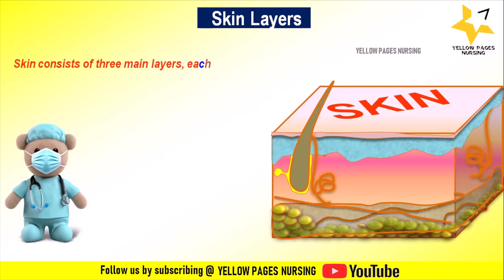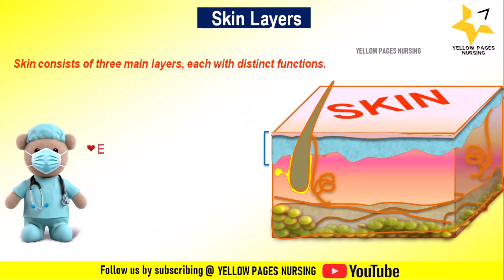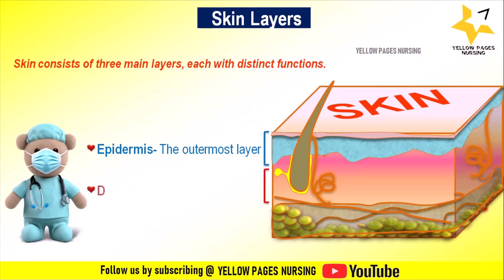Before entering into the classification, let's discuss briefly about the anatomy of skin layers. The skin is the largest organ of the body, serving as a protective barrier between the internal environment and the external world. It consists of three main layers, each with distinct functions. The outermost layer is called the epidermis; it provides a waterproof barrier and creates our skin tone.